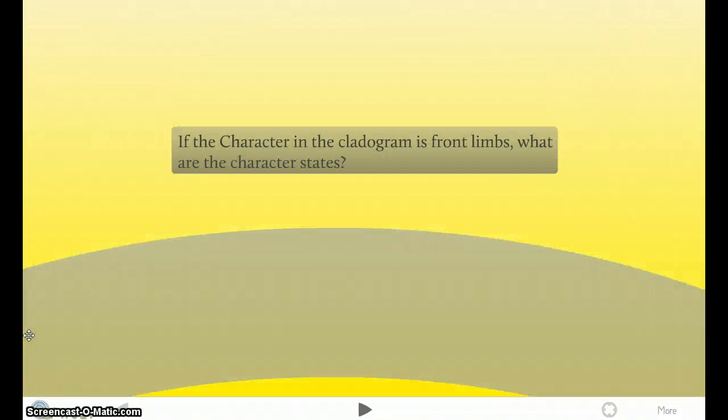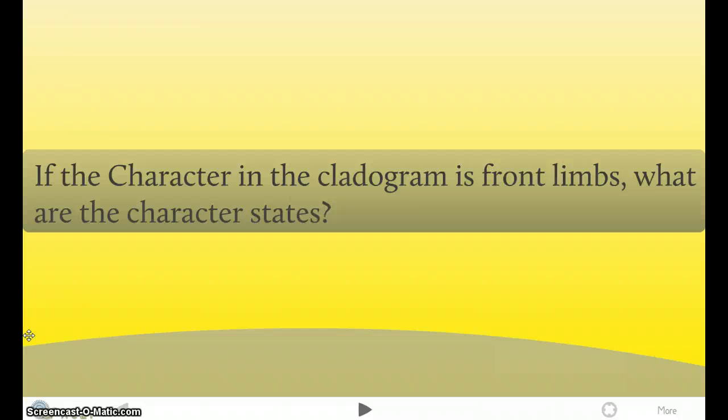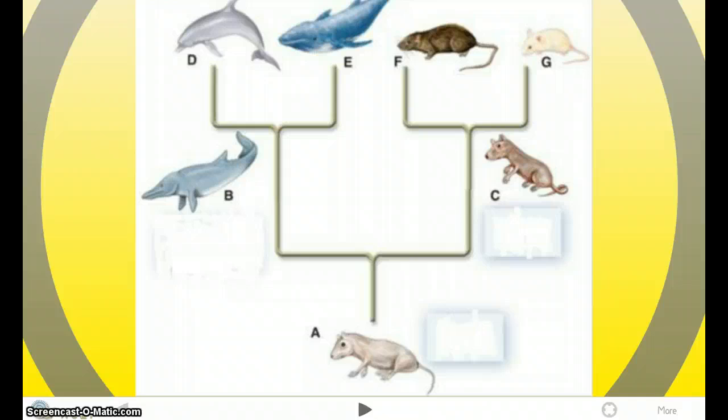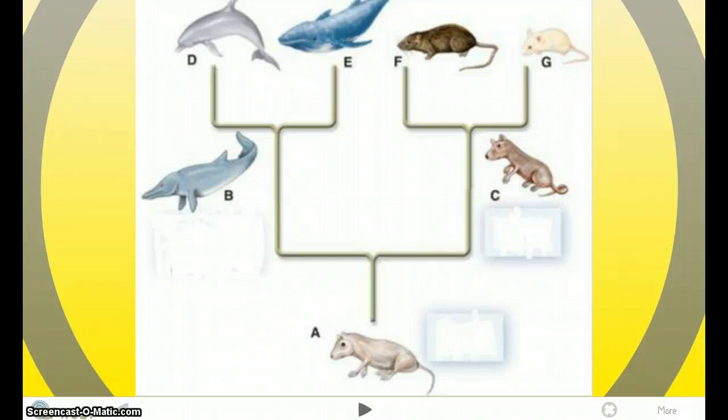So here is a simple cladogram. As you can see, the character is given for front limbs. They all have front limbs. A, B, C, D, E, F, G.